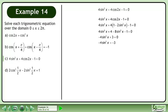Isolate the term with sin on the left side. Divide both sides by negative 4. This gives us sin²x equals 3 over 4. Take the square root of both sides.